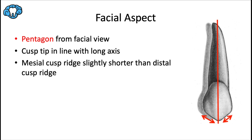From the facial aspect, the maxillary canine has a pentagonal shape — it most resembles a pentagon. The cusp tip falls in line with the long axis from the facial aspect. The mesial cusp ridge is slightly shorter than the distal cusp ridge, though both ridges make up about one-third of the overall crown height.